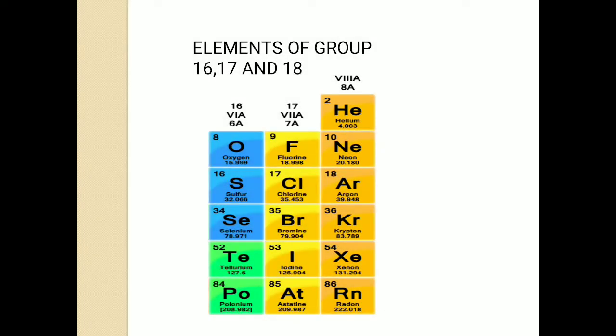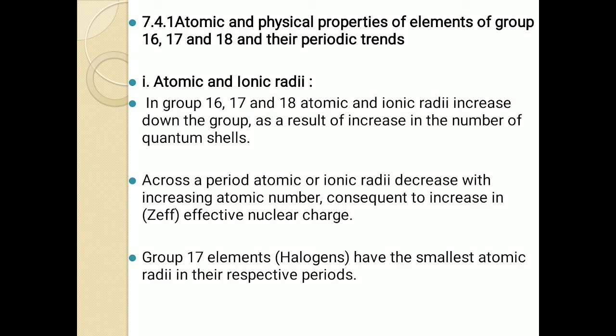Hello friends, welcome to the third session of chemistry. As you all know, we have started with the seventh lesson of your syllabus, that is elements of group 16, 17, and 18. In the last two sessions we learned about occurrence and electronic configuration of elements of group 16, 17, and 18, and we also started with periodic trends of physical properties. Of these physical properties, we learned about the first property — atomic and ionic radii.